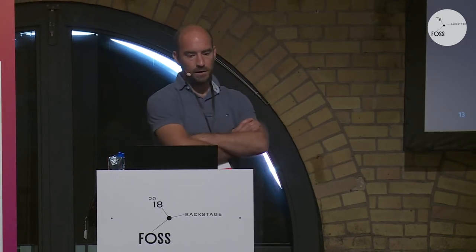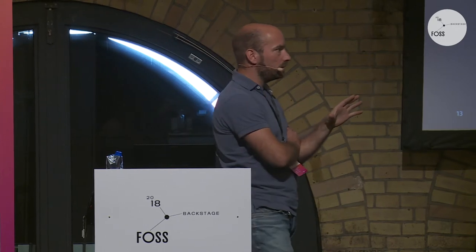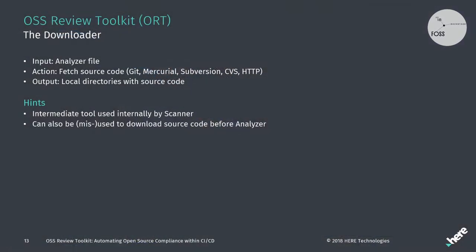Next in the toolkit is the downloader. It's a tool you would probably never use on its own — it is implicitly used by the scanner. The input for the downloader is the output of the analyzer. Its only purpose is to fetch the source code, wrapping whatever underlying VCS or protocol you are using — we support Git, Mercurial, Subversion, and so on. The output is simply a local directory with source code. You could also use it to download source code before running the analyzer.